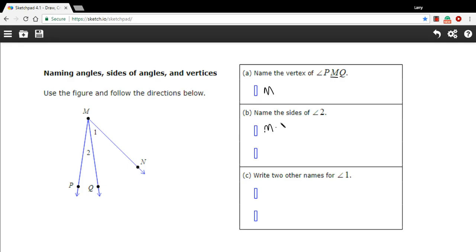M, P, with our ray symbol. And the other side starts at M and goes out through Q. So that would be M, Q, and again with our ray symbol.